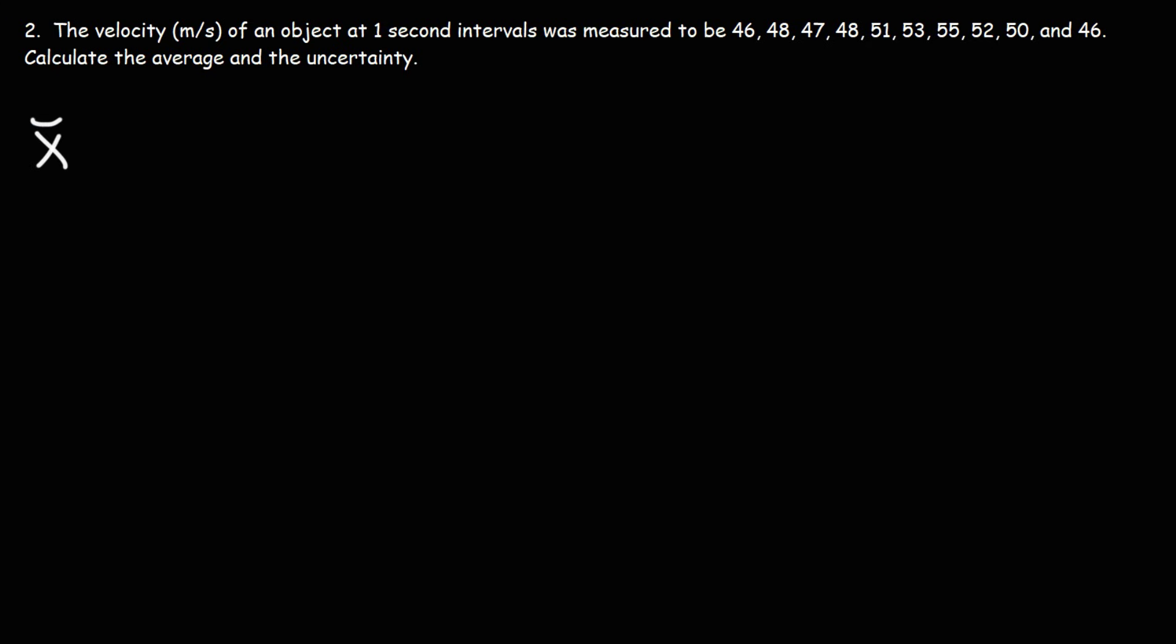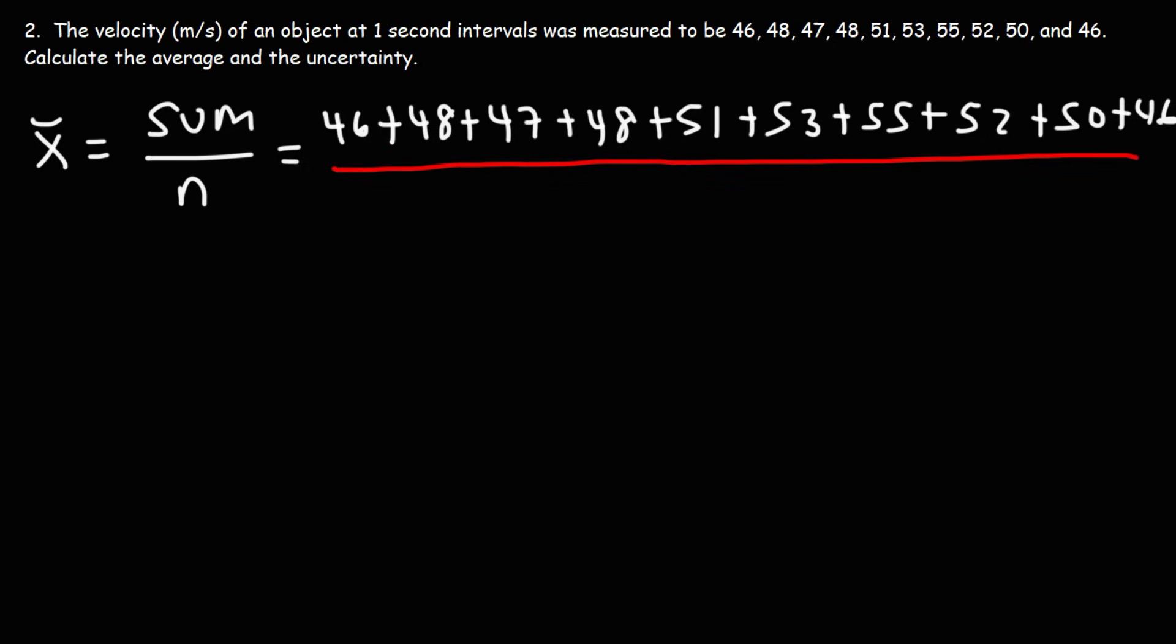So let's start by calculating the average. So let's take the sum and divide it by the number of numbers that we have. So we have 46 plus 48, 47, 48. And it looks like we have a total of 10 numbers. So n is 10.